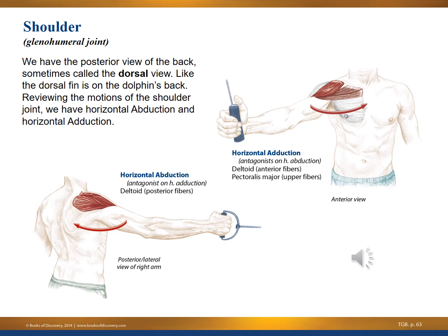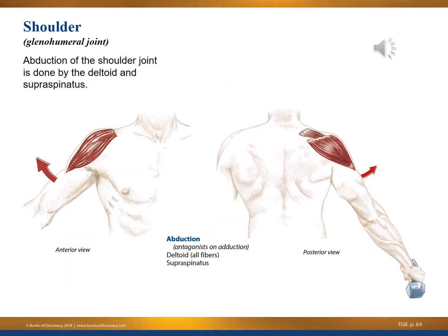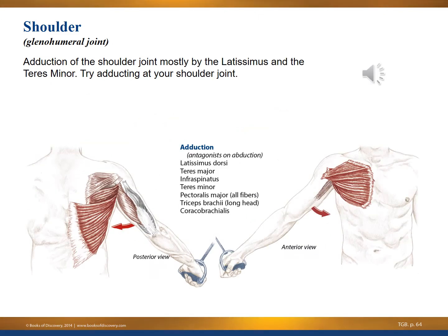Here we're reviewing the motions of the shoulder joint: horizontal abduction and horizontal adduction. More synergists of the glenohumeral joint — abduction of the shoulder joint is performed by the deltoid and the supraspinatus. Traditional adduction of the shoulder joint is done mostly by the latissimus dorsi and teres minor. To produce adduction, your arm would have to start parallel to the ground and move toward your body.